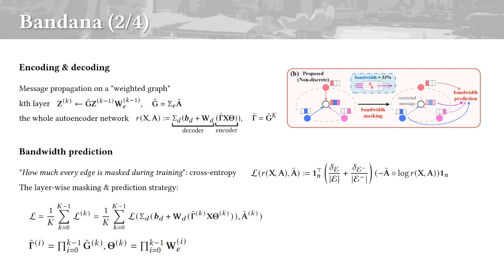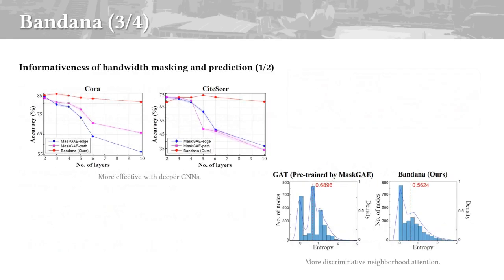In this way, the entire edge set of the original graph is now participating in training. Our proposed framework is informative, as it is more effective with deeper GNNs, and more discriminative in terms of neighbor messages.